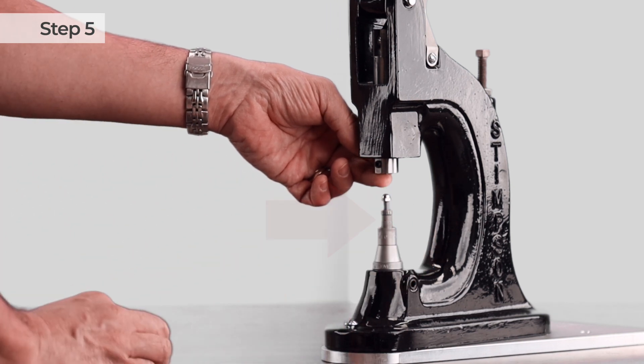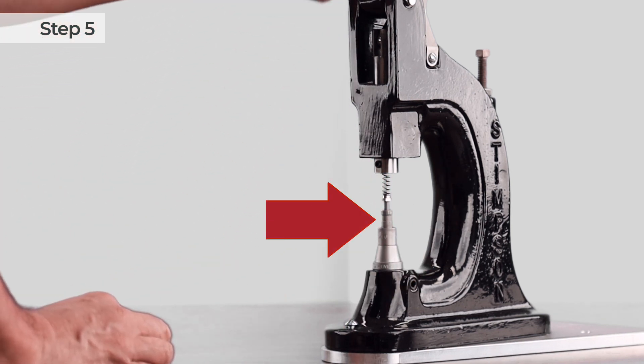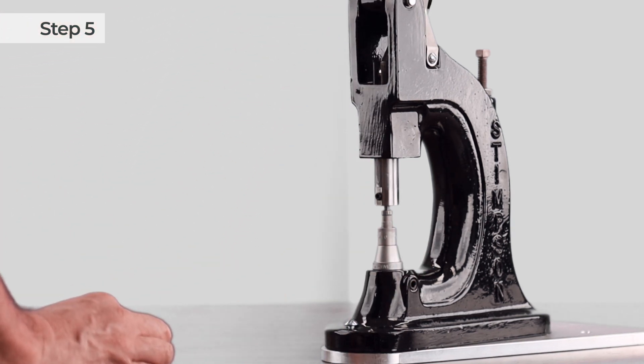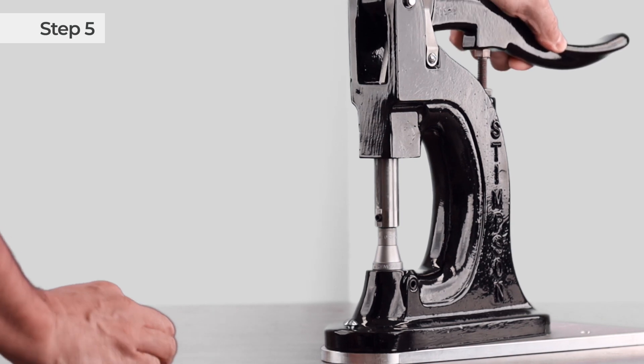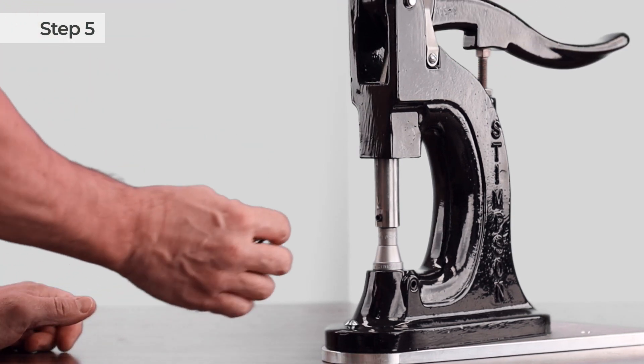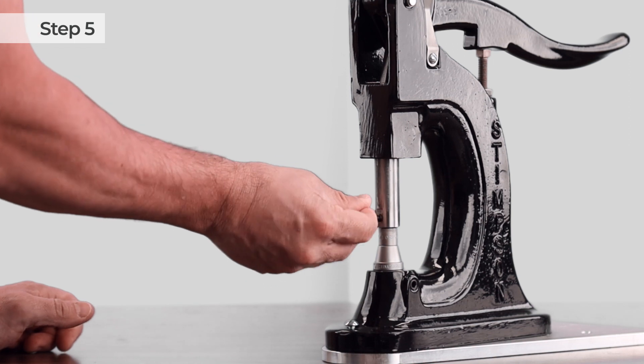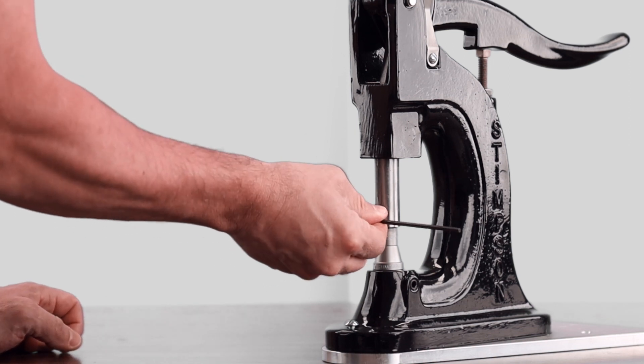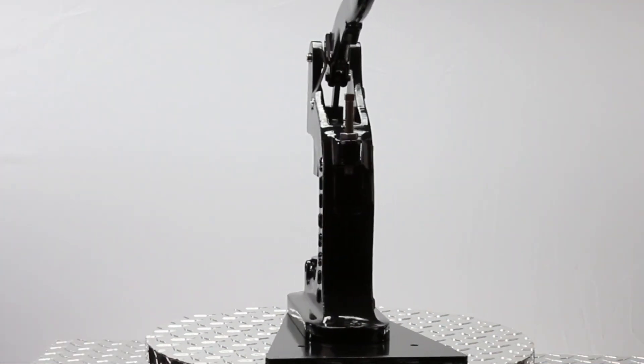If there's a flat side, face that forward so the set screw will tighten against it. Then push the handle down slowly like this. Make sure the tool is all the way in, then tighten the set screw. Now you're ready to go.